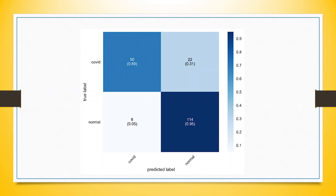After running the decision tree learning algorithm, the next step is to generate the accuracy score. The accuracy score is based on the confusion matrix. Let's try to understand this.